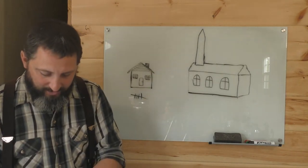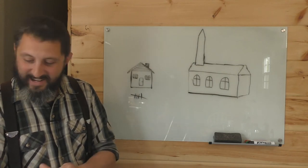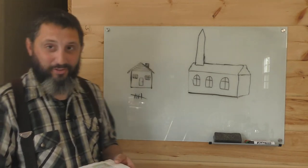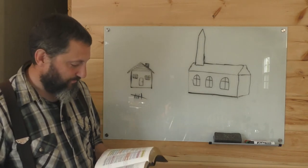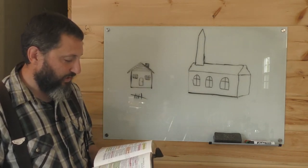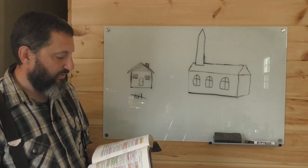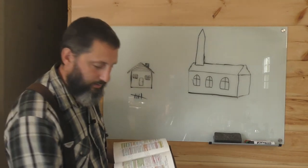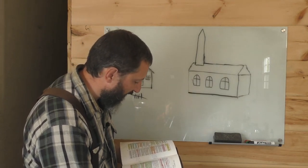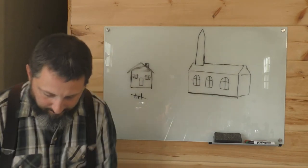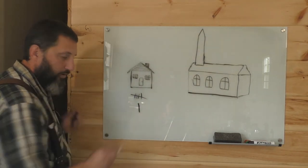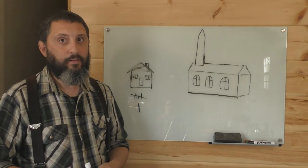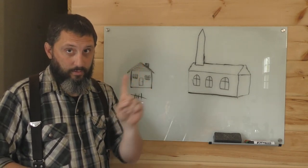Let's go to 2 Timothy chapter 4. When are you going to get a real church? 2 Timothy chapter 4, verses 9 through 11. Do thy diligence to come shortly unto me, for Demas hath forsaken me, having loved this present world and has departed unto Thessalonica, Crescens to Galatia, Titus unto Dalmatia, only Luke is with me. Take Mark and bring him with thee, for he is profitable to me for the ministry. Only Luke is with me. One. Luke. One. You understand?